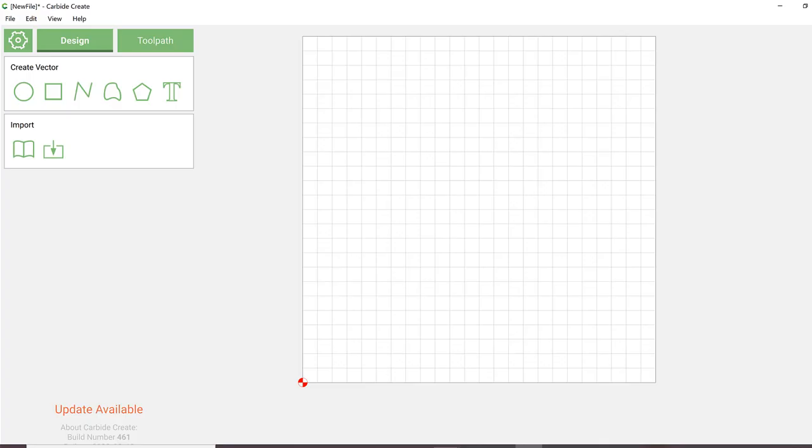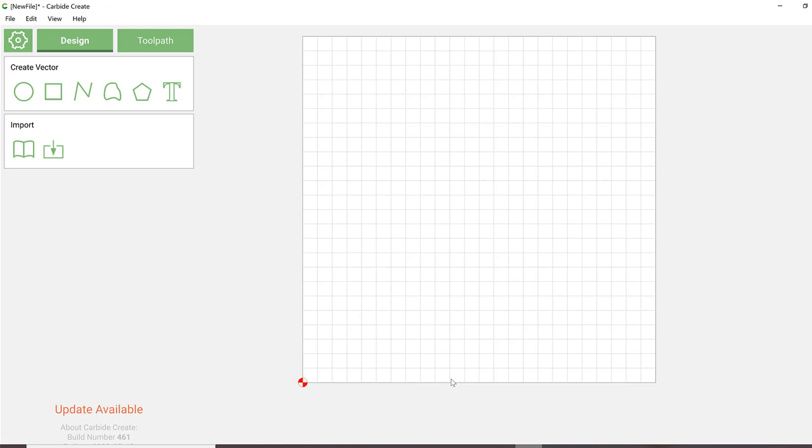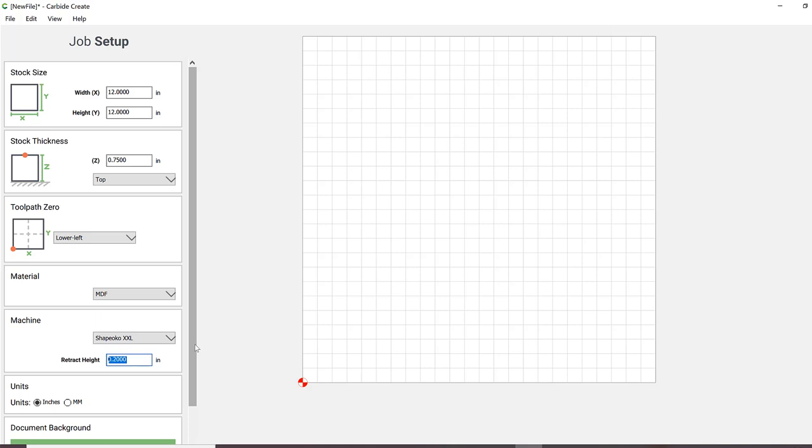Even if you've previously set up your job information in Carbide Create, it never hurts to double check your settings. To get the most accurate stock thickness, I measure my material using calipers. Personally, I prefer setting my grid spacing to half an inch. That way it's easier to get a general idea of the size while programming.